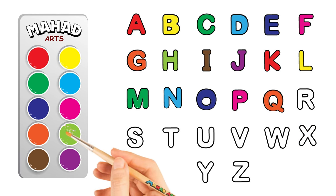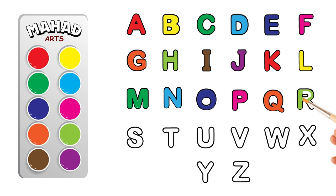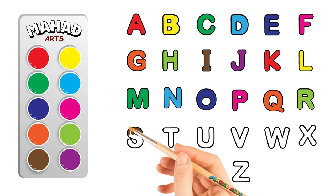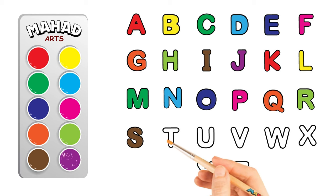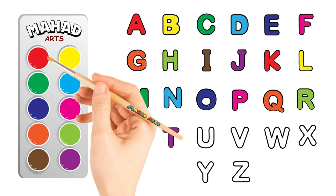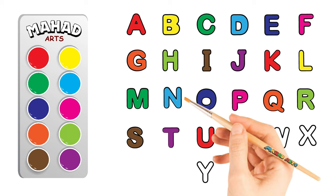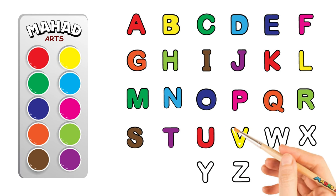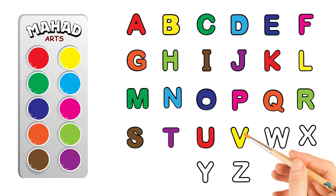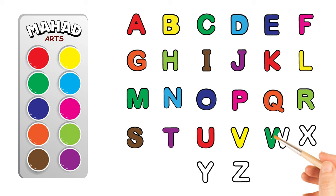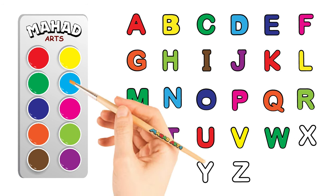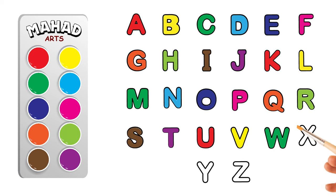A, B, C, D, E, F, G, H, I, J, K, L, M, N, O, P, Q, R, S, T, U, V, W, X, Y, and Z. Now I know my ABCs. Next time won't you sing with me.